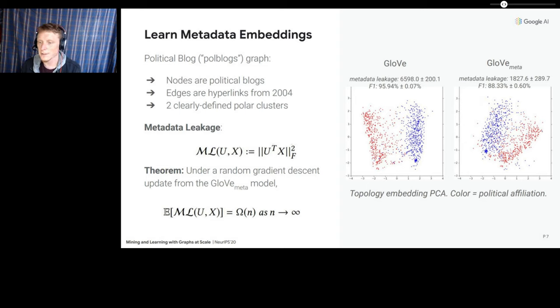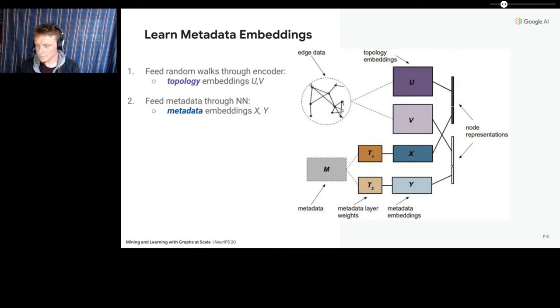We discovered that this was due to an effect called metadata leakage, in which metadata information is still captured by topology embeddings, since the two spaces are trained concurrently. We proved that this is actually a general effect for embedding models that include metadata dimensions. So we knew we needed to get around this somehow and solve this harder problem. We needed something stronger than this diagram right here, which is just a simple decomposition of the embedding space.